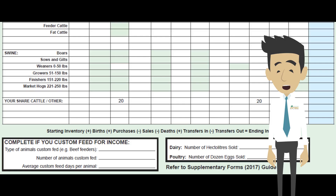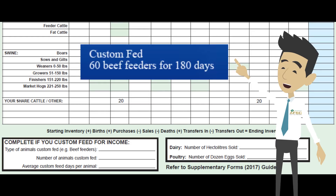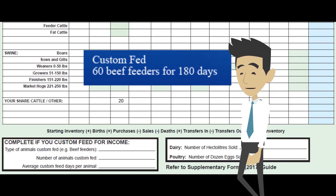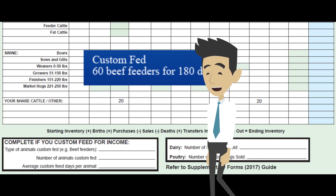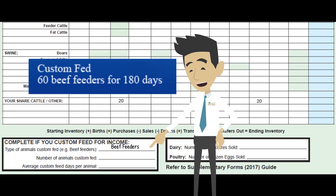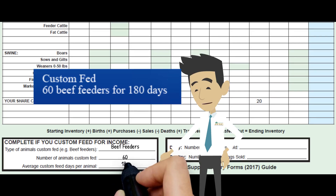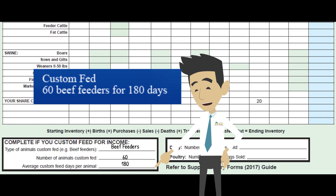All that's left to do now is to enter in the custom feeding. Joe custom fed 60 beef feeders for 180 days. Over here in the 'complete if you custom feed' box, we enter beef feeders. The number of animals custom fed is 60 and the amount of custom fed days per animal is 180.